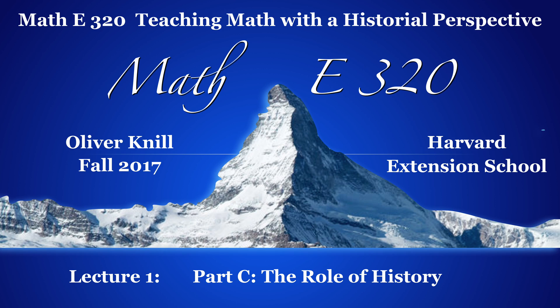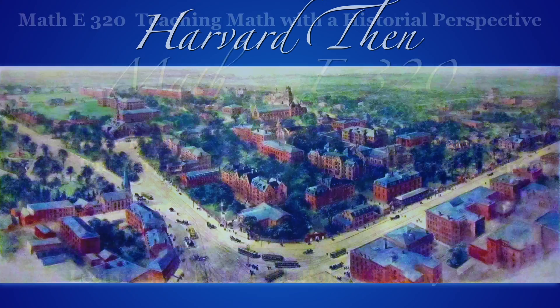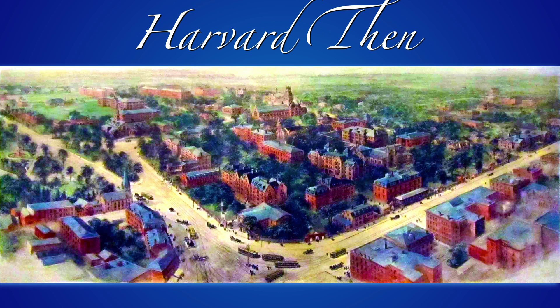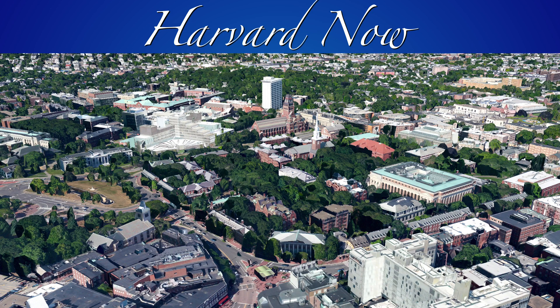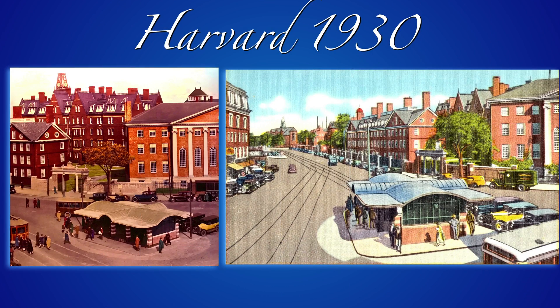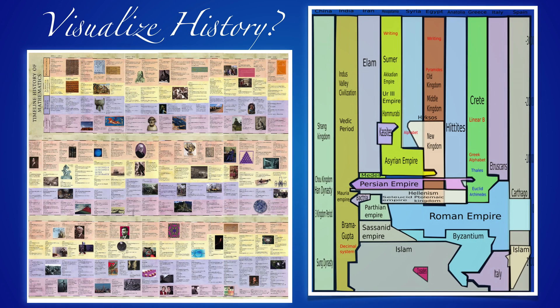In this third unit we look at the role of history. How did things look like in the past? Who was building what we see? Why were they doing it? How did things become what we see now? Here is a picture of Harvard Square about 100 to 150 years ago, and here is how it looks now with Google Earth. Some things change, some things did not change much.